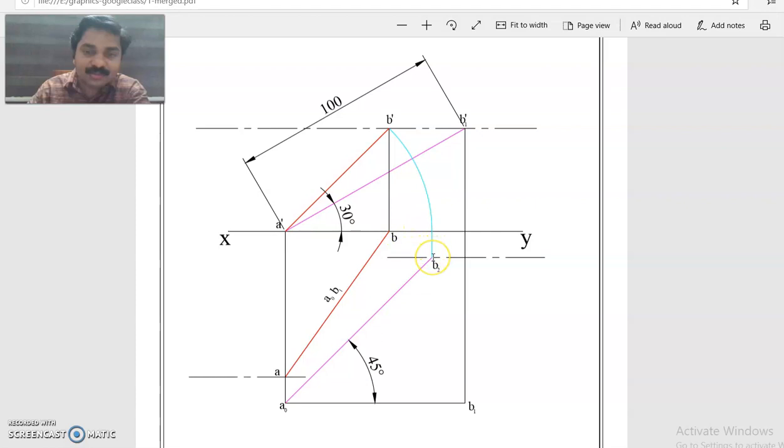This point is obtained by projecting from B2 to here. This may also be called B2 dash. Now this front view length has to be rotated to the front view locus. This is the front view locus because B1 dash is here, and there you have drawn the locus line. So A dash B2 dash is rotated to this point. Join this and this point.